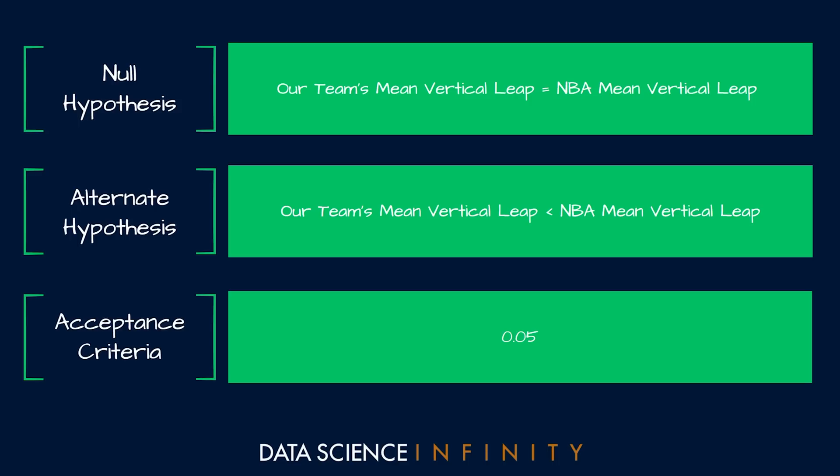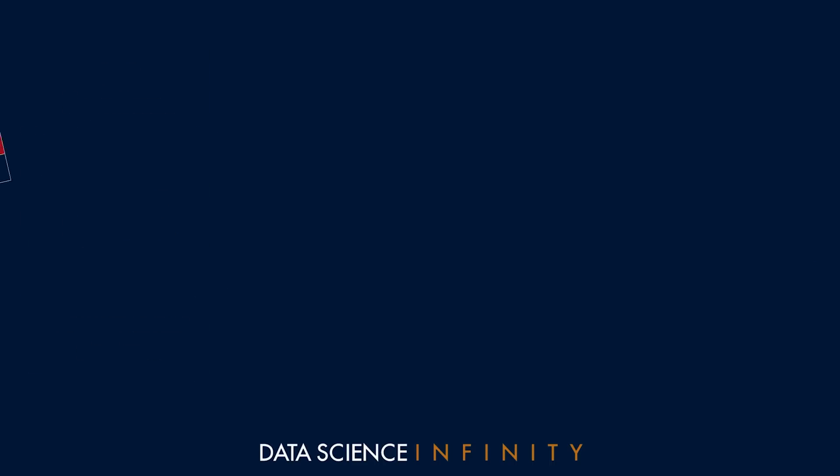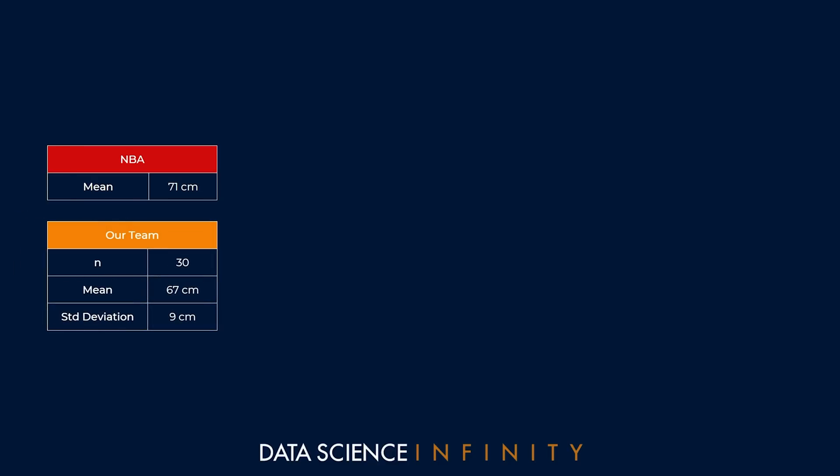As the coach, we have looked into the available statistics for the NBA and calculated that the mean vertical leap across all players is 71 centimeters. For our squad of 30 players, we run the same calculations and get a mean vertical leap of 67 centimeters with a standard deviation of 9 centimeters. On the surface it appears that our team is lagging behind on this metric — 71 centimeters for all players and only 67 centimeters for our players. As coach, we want to understand if this is a robust conclusion or if the difference could just be down to chance or noise in the data.